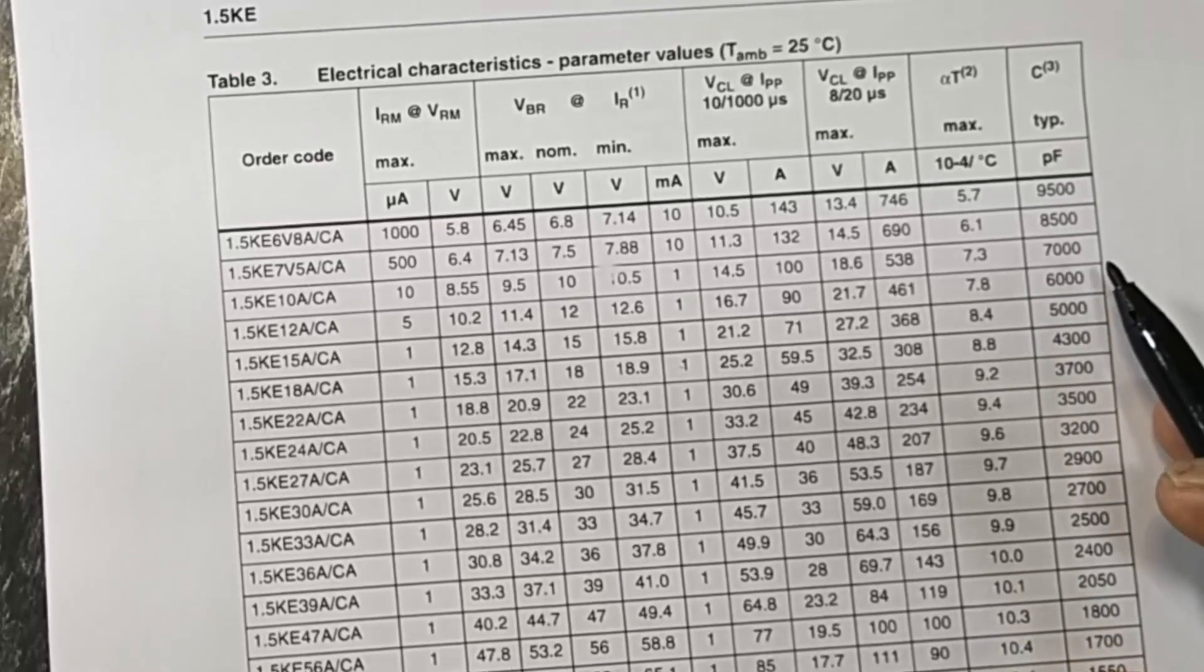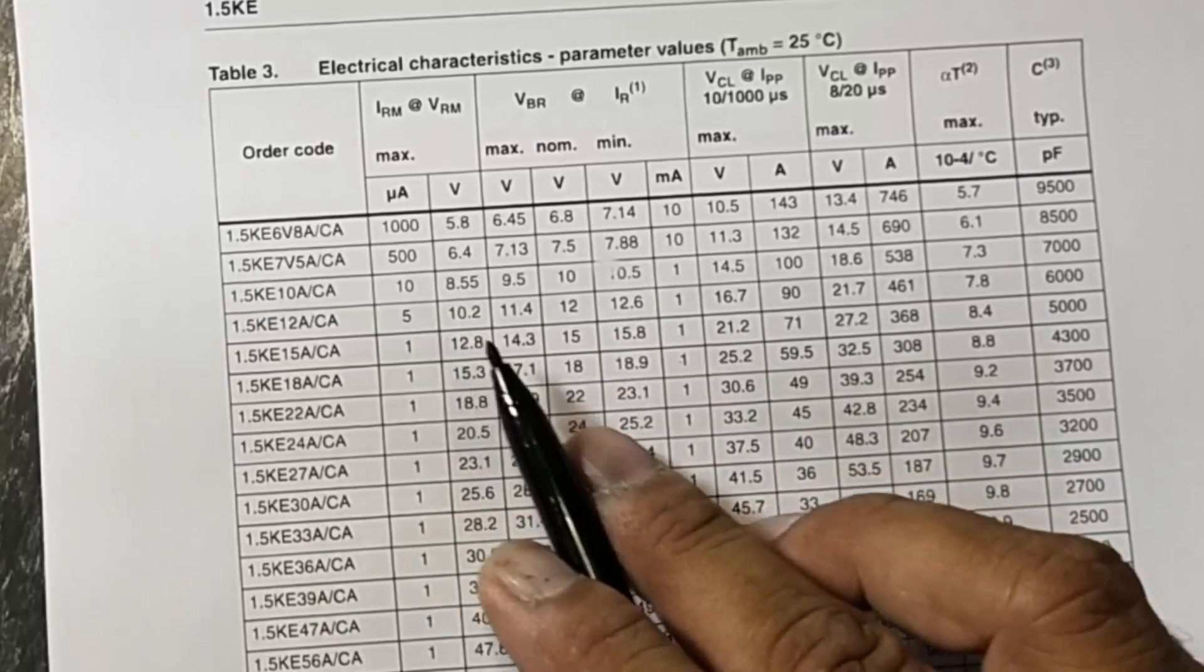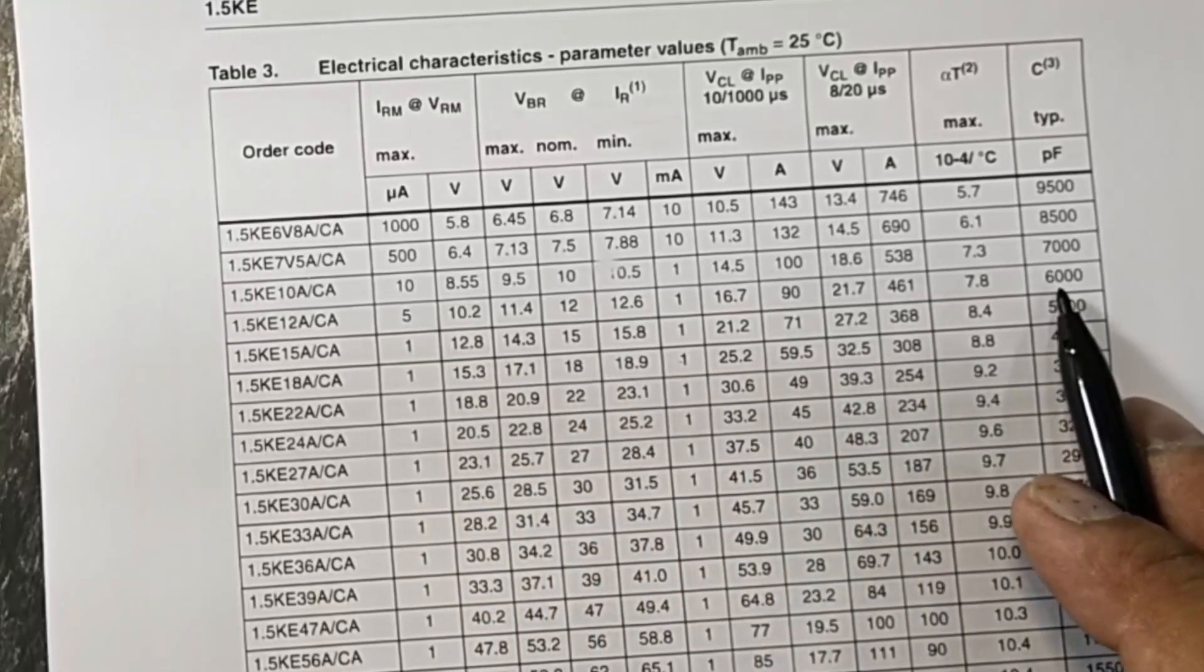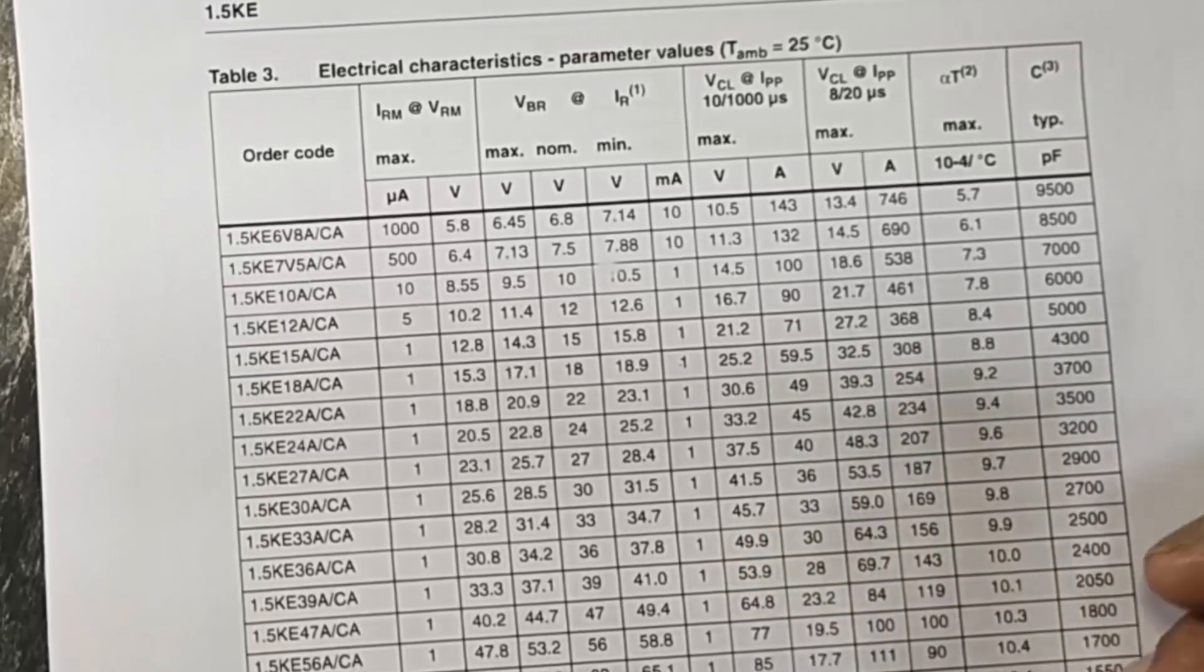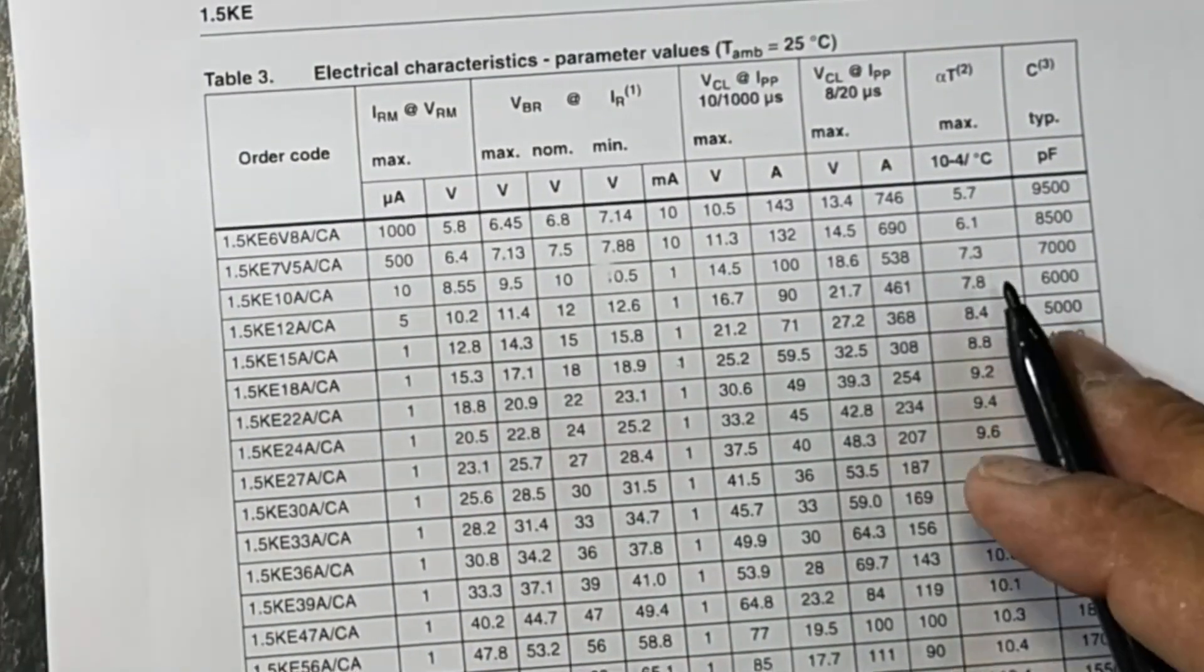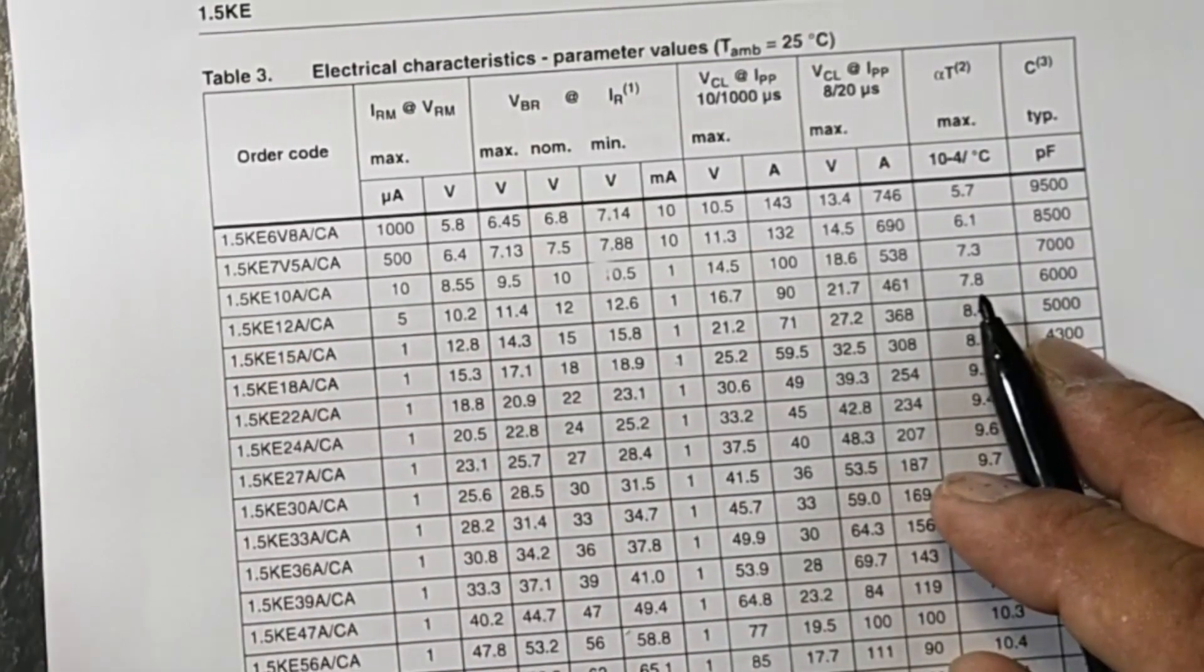Then it has a capacitance, because it is used in reverse bias. So in reverse bias it also generates a capacitance - so 6000 picofarad capacitance it can also provide in the circuit. And here maximum temperature 7.8 degrees celsius per watt it can increase the temperature.